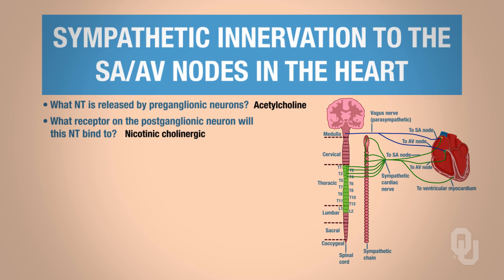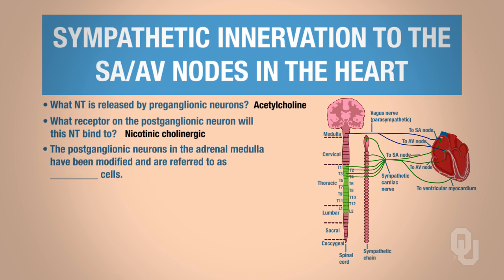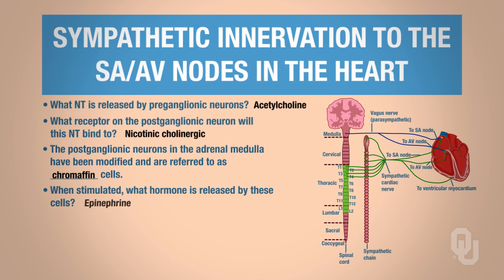Keep in mind that the postganglionic neurons in the adrenal medulla have been modified and are now referred to as chromaffin cells. When stimulated, the hormone released from these cells is primarily epinephrine, though the postganglionic neuron can also release norepinephrine.